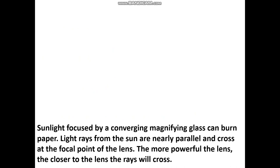We can use a convex lens to focus sunlight. The sunlight focused by a converging magnifying glass can burn paper. Light rays from the sun are nearly parallel and cross at the focal point of the lens — that means after passing through the lens they converge at the focus. When a piece of paper or something else is kept at the focus, due to the intensity of the heat, it gets burned up.